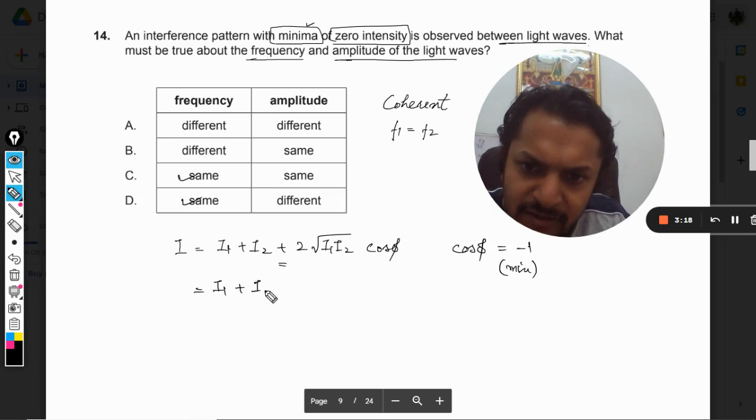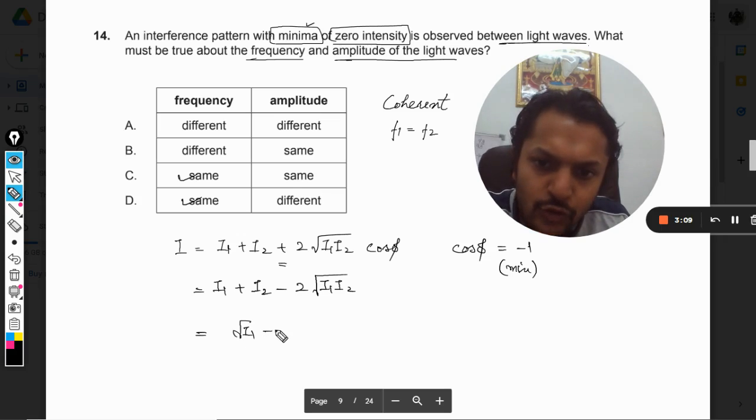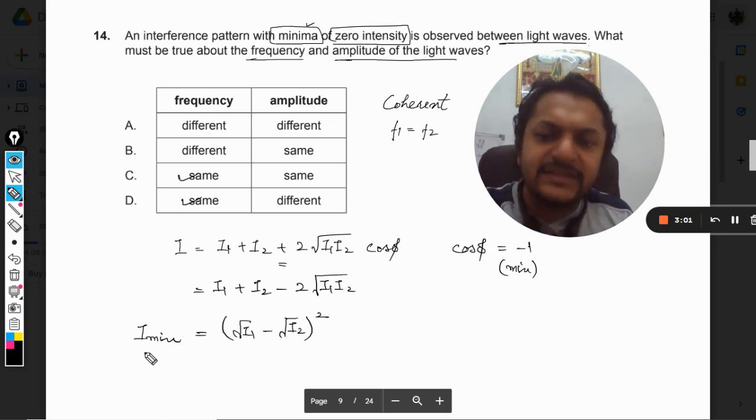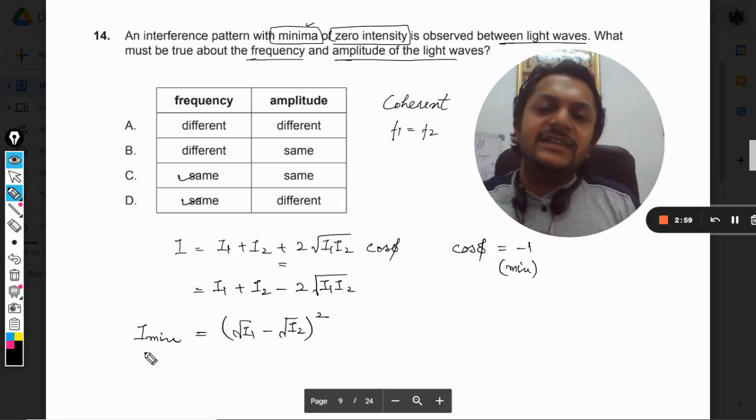So it will come out to be I₁ + I₂ - 2√(I₁I₂), which in turn can be written as (√I₁ - √I₂)². Can I write this thing as this? So this is the formulation for the minimum intensity.